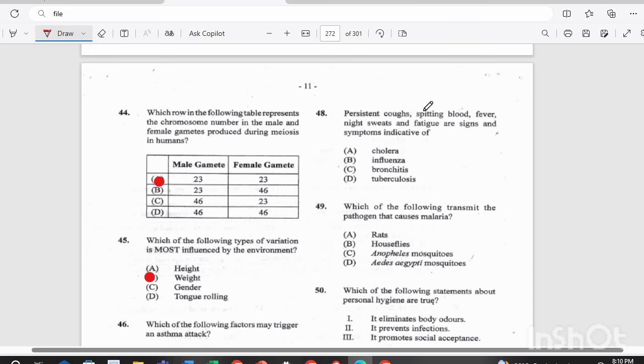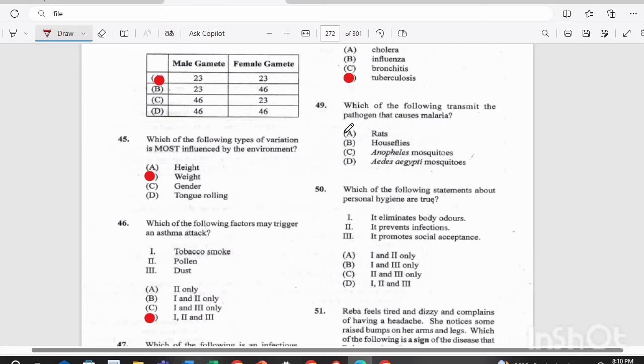Question 48. Persistent coughs, spitting blood, fever, night sweats, and fatigue are signs and symptoms indicative of A, cholera, B, influenza, C, bronchitis, or D, tuberculosis? If you answered C, bronchitis, you're incorrect. It's actually tuberculosis that causes all of these symptoms.